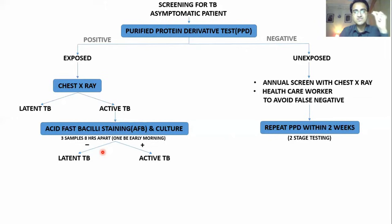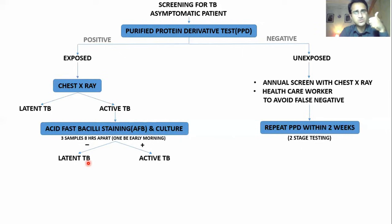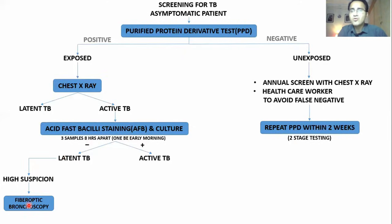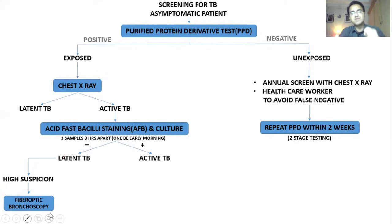Sometimes AFB staining is negative and culture is negative, but you are highly suspicious the patient has active TB because they are showing symptoms such as weight loss, fever, hemoptysis, and night sweats. Or the patient cannot produce sputum. In such highly suspicious patients, you go for fiber optic bronchoscopy. You get inside the lungs with a bronchoscope, take samples, and those samples are cultured and stained. If negative, it means latent TB.